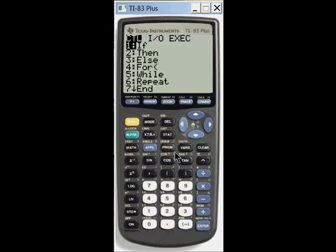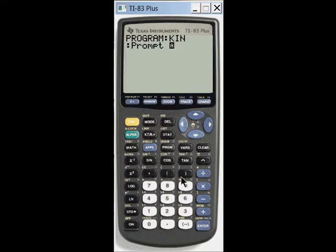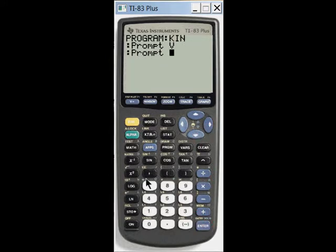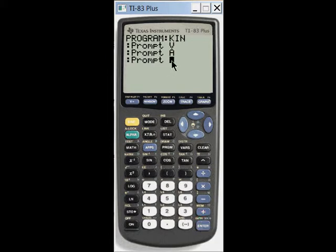We're going to go to program, input-output, and we're going to go for prompt instead of input. Prompt is actually pretty nice because it asks you the question. Prompt alpha v for velocity. Then program input-output prompt, I'm not going to use t for theta because t is kind of for time, but I'll use a for an angle, alpha a. So the angle in the xy plane. And then program input-output prompt for, in this case I'm going to use p for phi, and that's the angle up off the horizon. So we're really just inputting three different angles here.